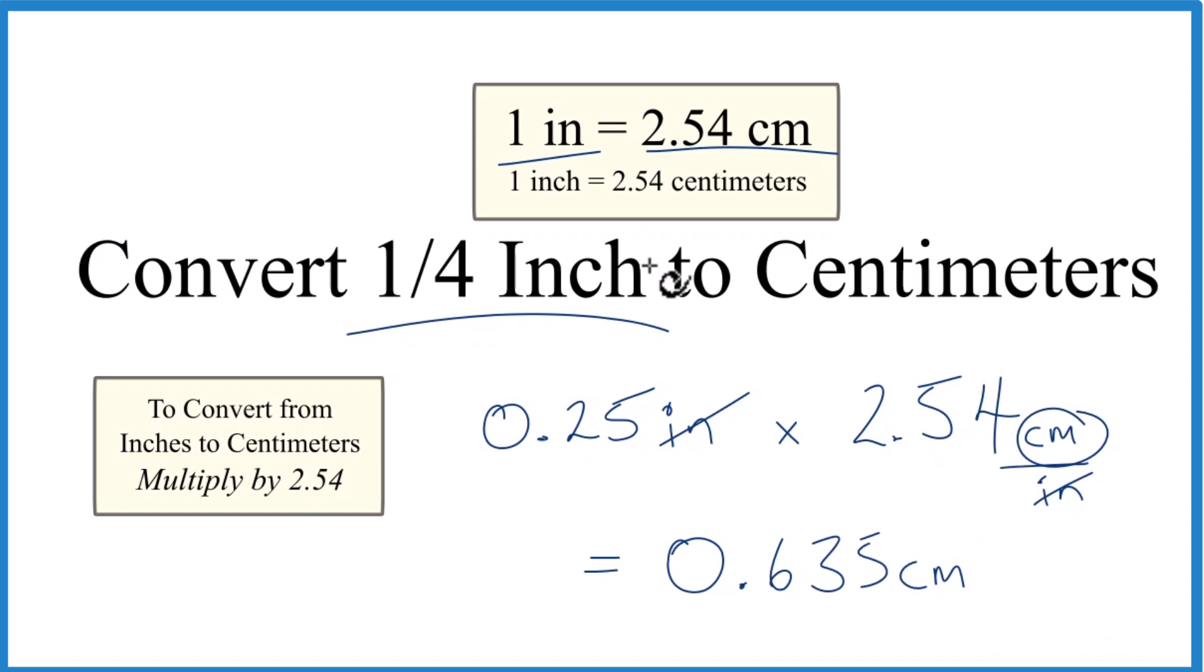We also know that when we go from inches to centimeters we should get a larger number than we started with. We started with 0.25, we ended with 0.635, so this is larger. That also makes sense.